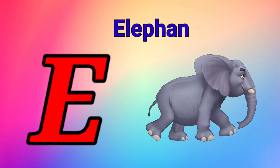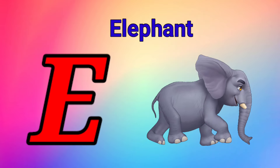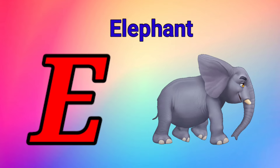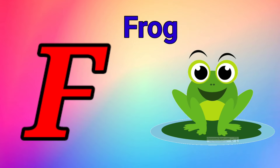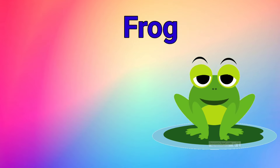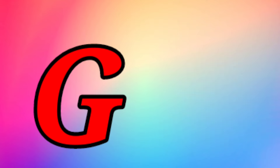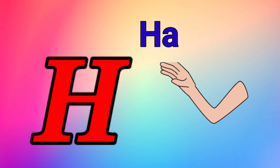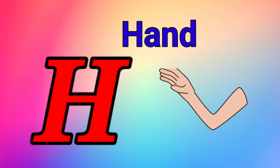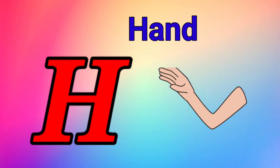E is for elephant, e-e-elephant. F is for frog, f-f-frog. G is for goat, g-g-goat. H is for hand, h-h-hand.